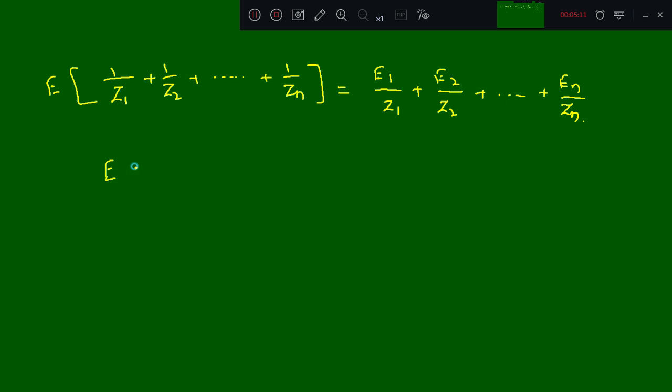If I rearrange this, E is equal to what I am going to get? E1 Y1 plus E2 Y2 plus till En Yn divided by Y1 plus Y2 plus till Yn. This is the E equation I am going to get.